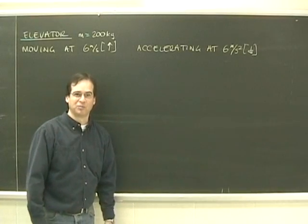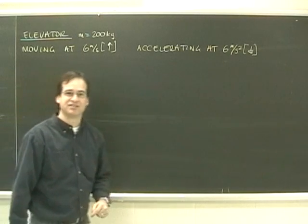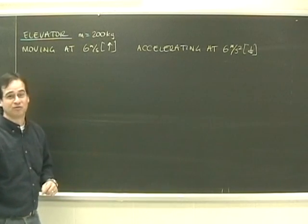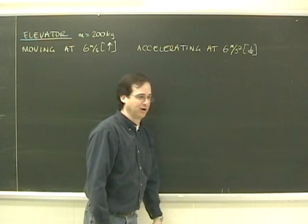What we want to do is look at a couple of elevator problems. We've got two situations, one where the elevator is moving at 6 meters per second, which means uniform motion, and the other one where the elevator is accelerating down at 6 meters per second squared.